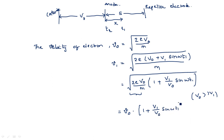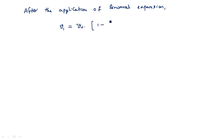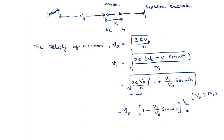Using binomial expansion, since V0 is much greater than V1, we can expand the square root term and neglect higher order terms. After applying the binomial expansion, the equation becomes v1 equals v0 times (1 plus V1 divided by 2V0 times sine(omega t1)). We label this as equation 1 and equation 2 and set them aside for later use.